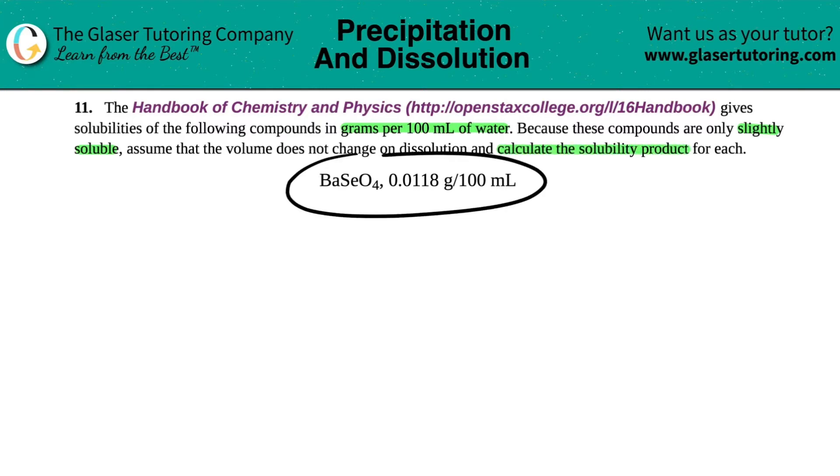And then we have this example right here. So we have BaSeO4 with a solubility of 0.0118 grams per 100 mils of water. And they just want you to calculate the solubility product.